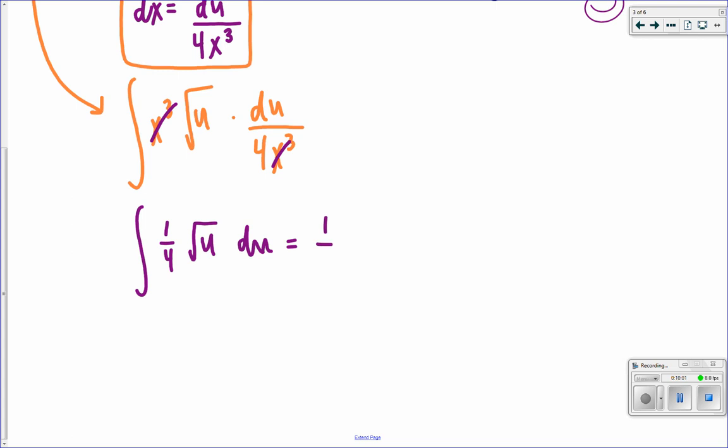We can do a couple other things before we make this official. But we can pull the 1 fourth up front, so we don't need to worry about it until the end. The integral of u, really, to the 1 half du. So, now take a derivative. What would this be? Excuse me, take an antiderivative. I said derivative. Oh, my goodness. I've made so many of these this morning, so my brain's a little mush right now.